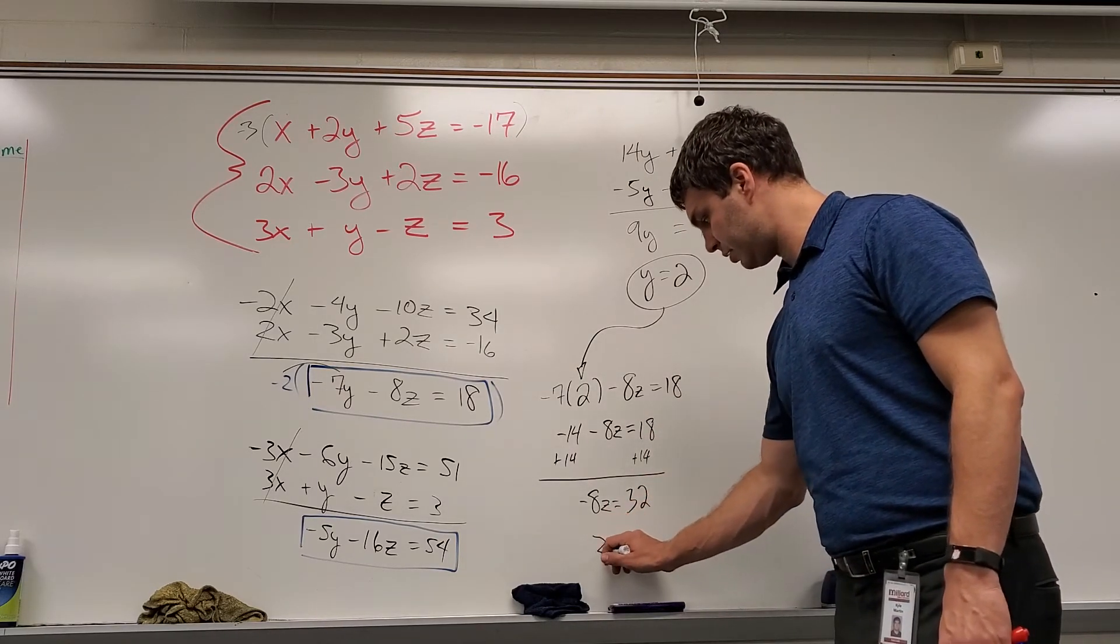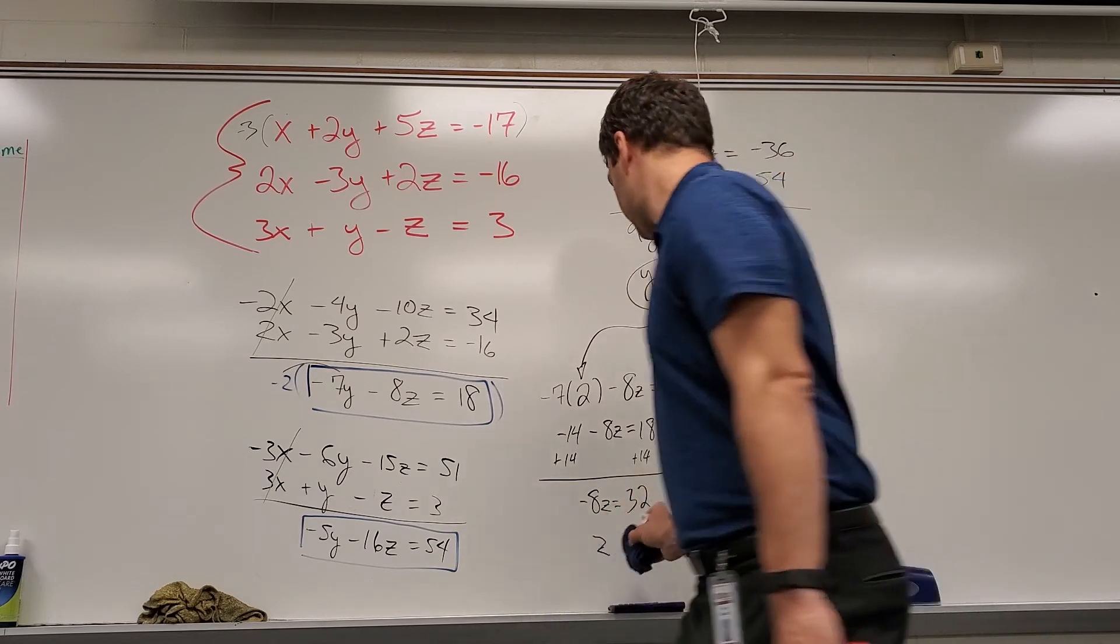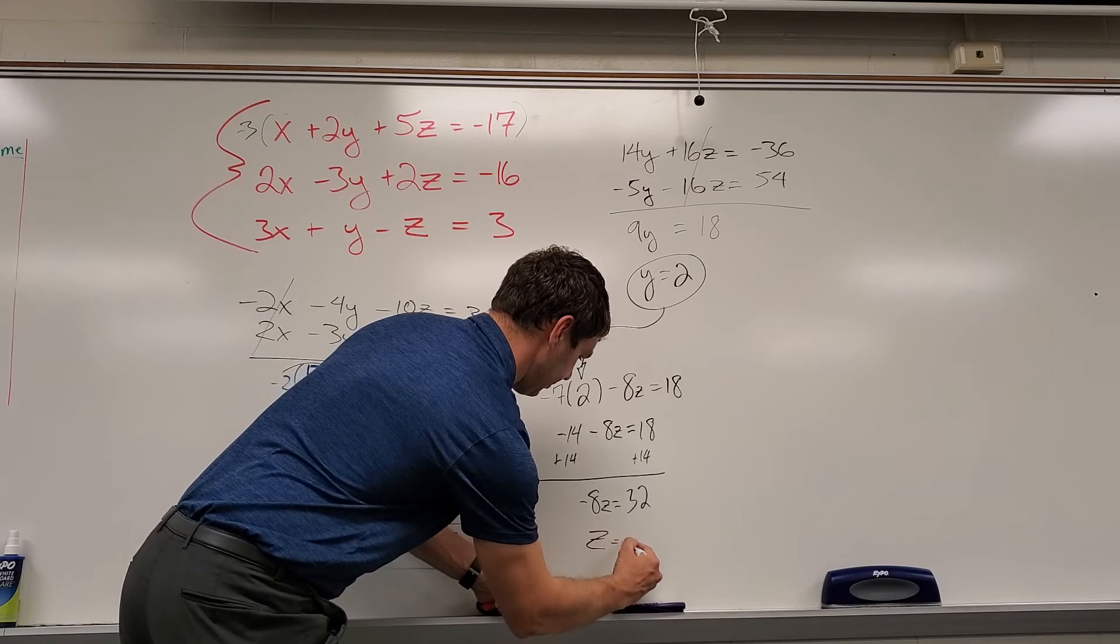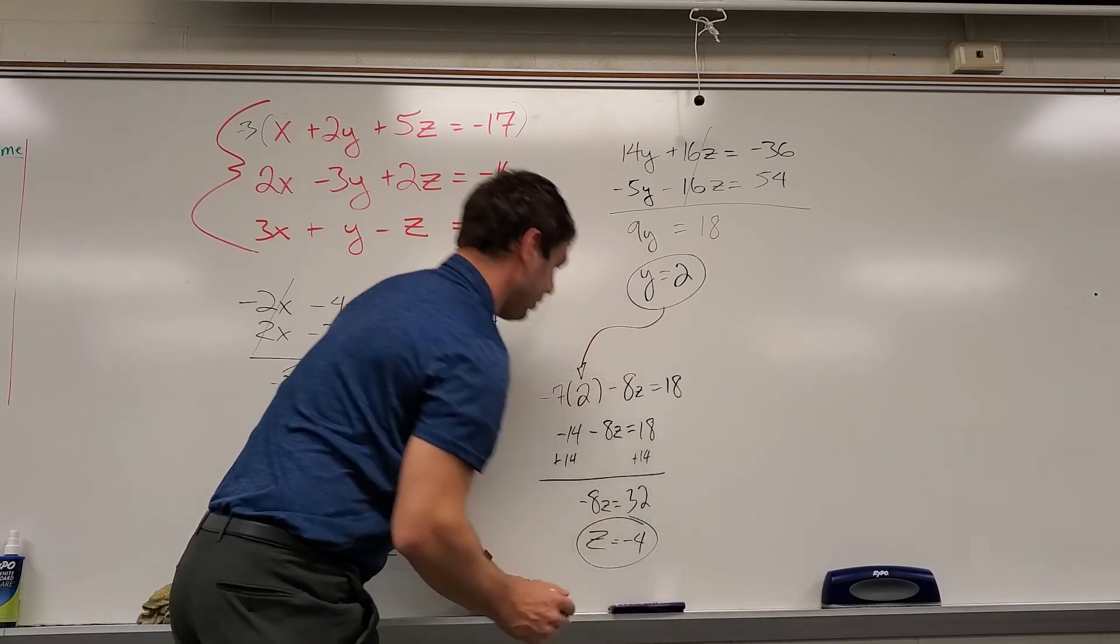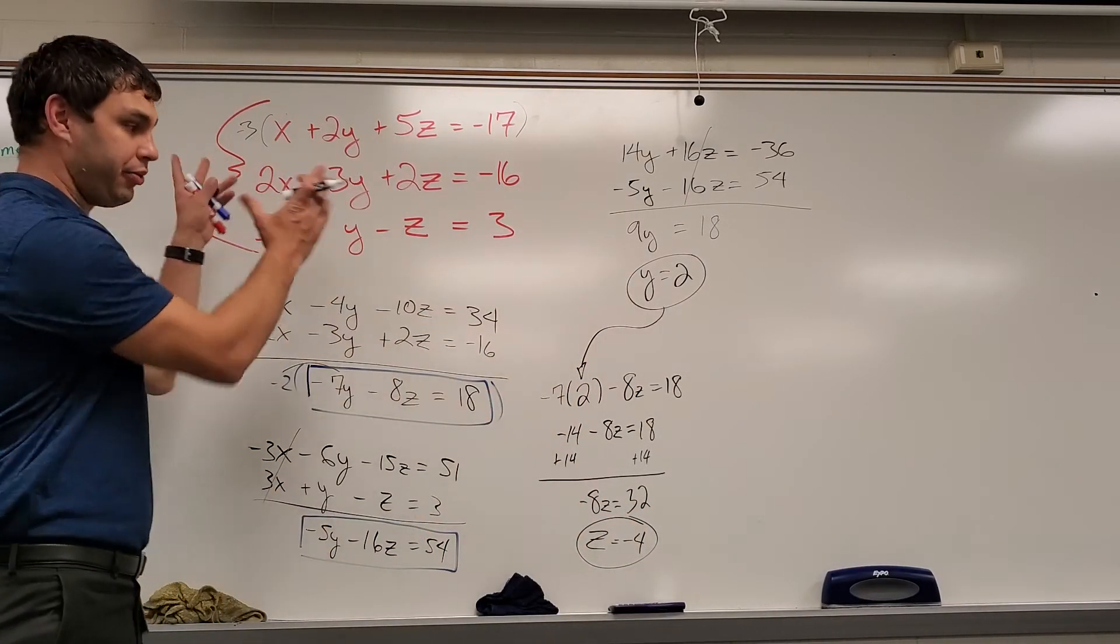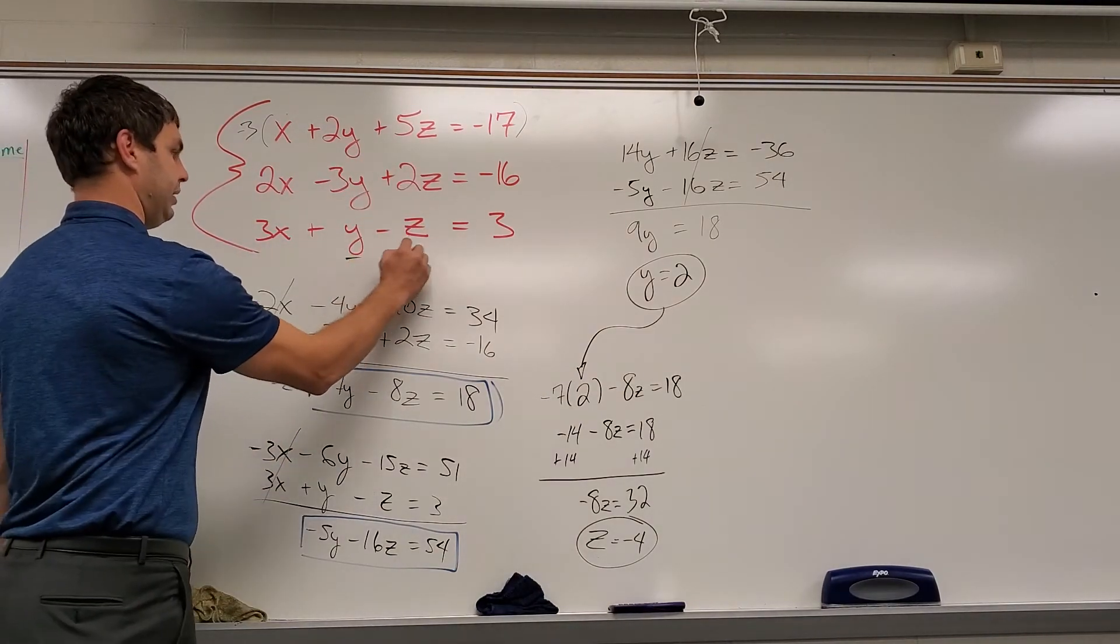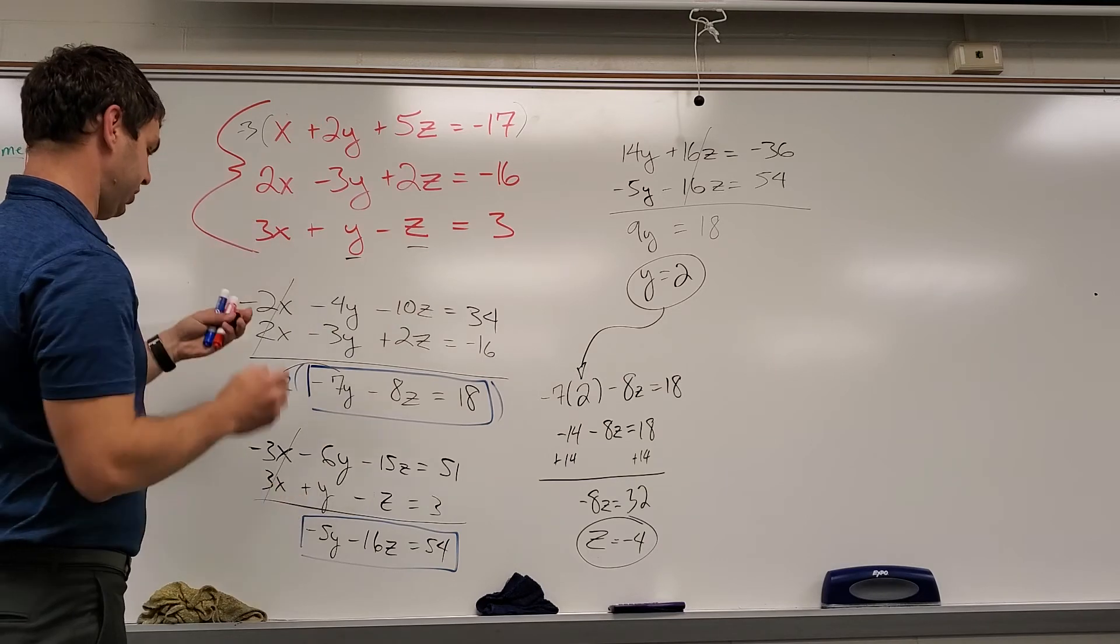Negative 8z equals 32. So z is going to be negative 4. All right, so now I have a y and I have a z. Now I can put both of those back into one of the original red ones, and I think this bottom one might be easiest to do.